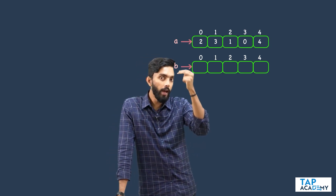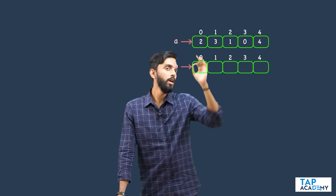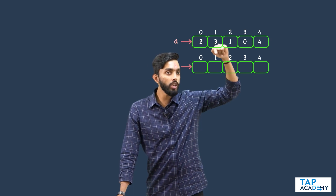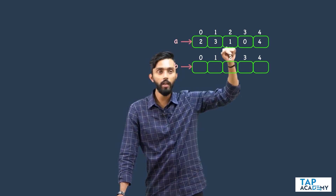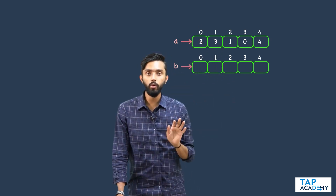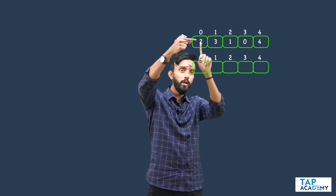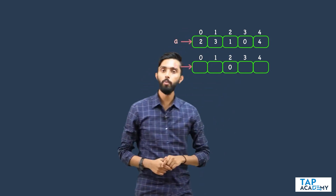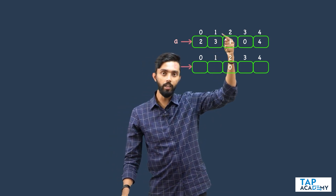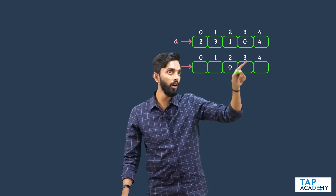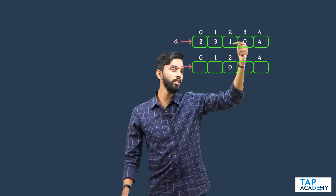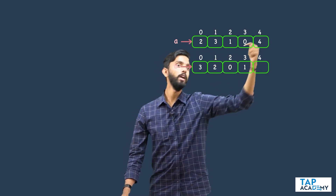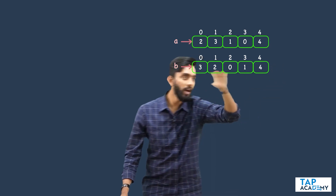If b truly has to be the inverse of a, then go to a and whatever is the value at that position, you must go to that index in the b array, and whatever is the index, that should become the value. For example: index is 0, value is 2 — go to the second index in b and store 0. Index 1, value 3 — in the third index store 1. Index 2, value 1 — in the first index store 2. Index 3, value 0 — in the zeroth index store 3. Index 4, value 4 — in the fourth index store 4. This is how the inverse is created.